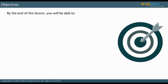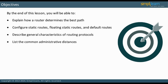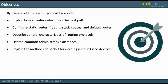By the end of this lesson, you will be able to explain how a router determines the best path, configure static routes, floating static routes, and default routes, describe general characteristics of routing protocols, list the common administrative distances, and explain the methods of packet forwarding used in Cisco devices.